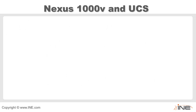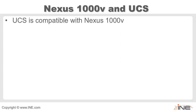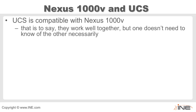Taking a look at the Cisco Nexus 1000V and how it pertains to UCS: the UCS is compatible with Nexus 1000V, despite what some people have said. They work perfectly well together, but one doesn't really need to know of the other necessarily. The UCS doesn't need to know about the Nexus 1000V, and the Nexus 1000V doesn't necessarily need to know it's running on top of a UCS blade series, as long as we as administrators don't misprovision it.